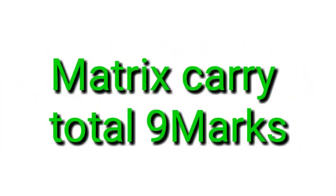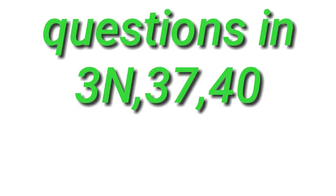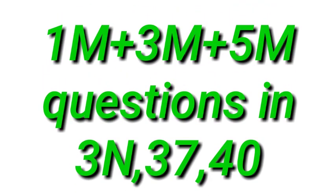Next, you have matrix, and you have 9 marks total. It is 1 plus 3 plus 5: 1 mark is 1 question, 3 marks is 1 question, 5 marks is 1 question. For 1 mark it covers about 3 marks worth, 3 marks covers about 27 marks worth, and 5 marks covers about 40 marks worth.